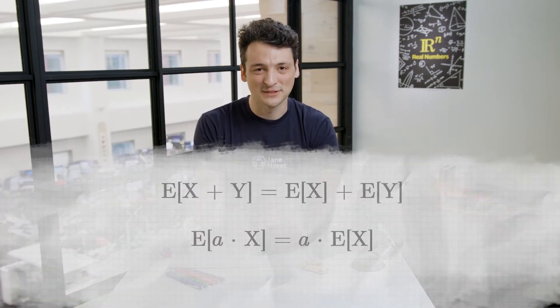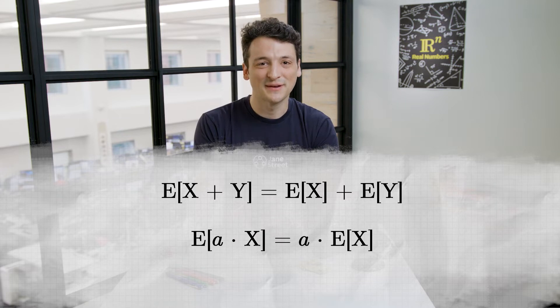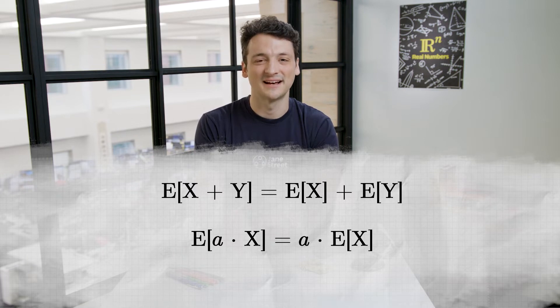Expected value is the probabilistic average of a random process. It gives the different outcomes of the random process averaged together, weighted by their probabilities of happening. One extremely useful property of this statistic is linearity. This means that the expected value respects addition of random variables and multiplication by a constant. The expected value of X plus Y equals the expected value of X plus the expected value of Y for any two random variables X and Y, and the expected value of a times X equals a times the expected value of X for any random variable X and constant a.